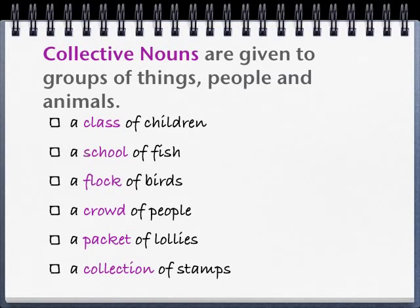Collective nouns are given to groups of things, peoples and animals. So you might talk about a class of children, a school of fish, a flock of birds, a crowd of people, a packet of lollies and a collection of stamps.